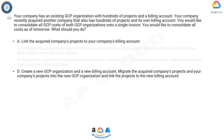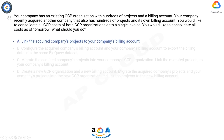Answer D involves creating a new GCP organization and a new billing account and migrating both companies' projects into the new organization and billing account. While this approach can consolidate costs onto a single invoice, it is a more complex and time-consuming process that may not be feasible to complete within 24 hours. It is also not ideal if the two companies' projects have different access control requirements or billing policies that need to be maintained separately.